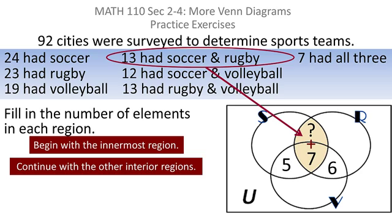Then I'll go to the overlap between soccer and rugby. I already have seven. I need to get up to 13, so I need six more.